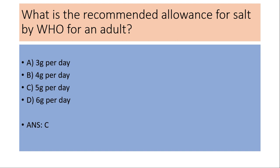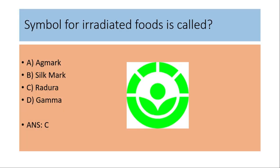What is the recommended allowance for salt by the WHO for an adult? (a) 3 g/day, (b) 4 g/day, (c) 5 g/day, (d) 6 g/day. The answer is (c) 5 grams per day. The symbol for irradiated foods is called: (a) egg mark, (b) silk mark, (c) radura, (d) gamma. The answer is radura.